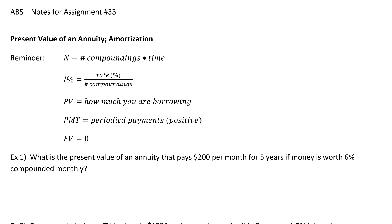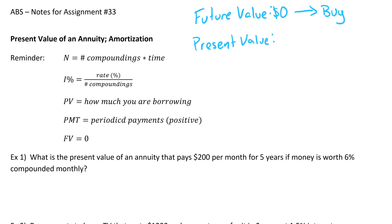Today we're going to be talking about present value. Last time we talked about future value — future value means you're starting with zero dollars, saving up, and then buying something. Present value means you get to buy it in the present, which usually means a loan, and then eventually you pay off that debt and get down to zero dollars. If you're buying it in the future, it's future value; if you want to buy it now, it's present value.